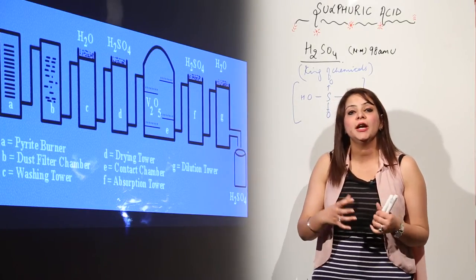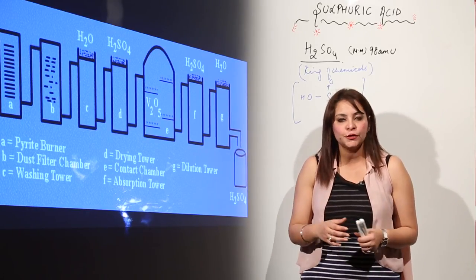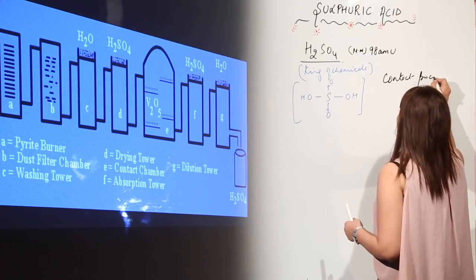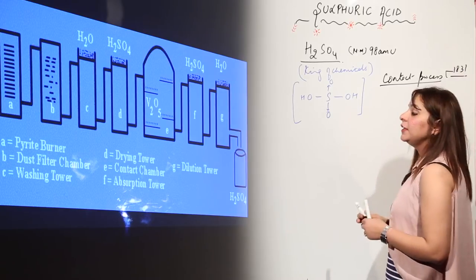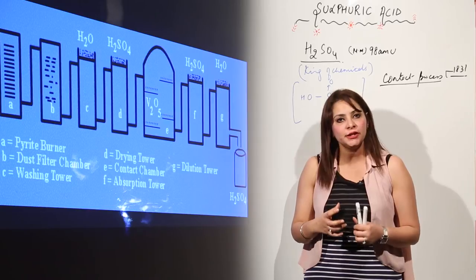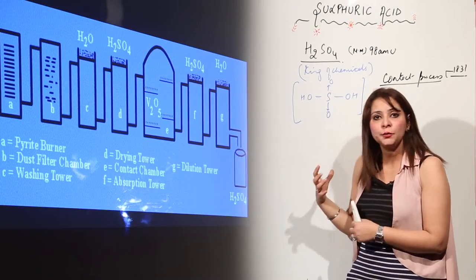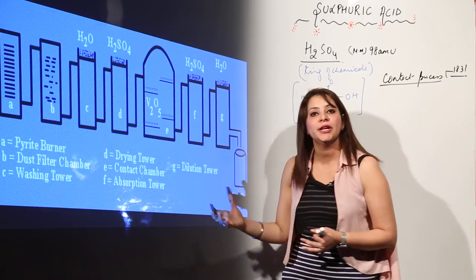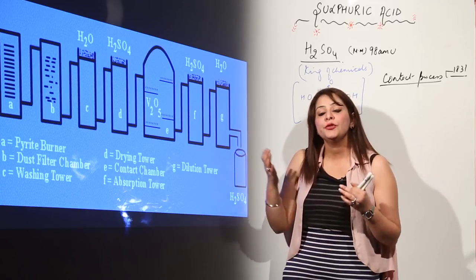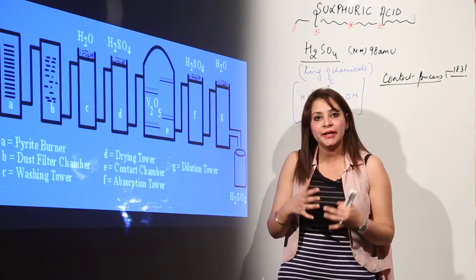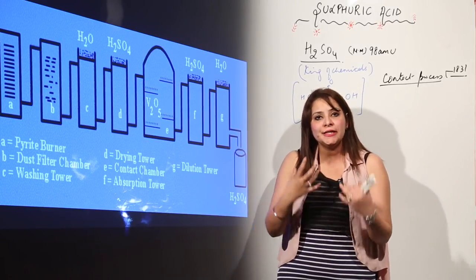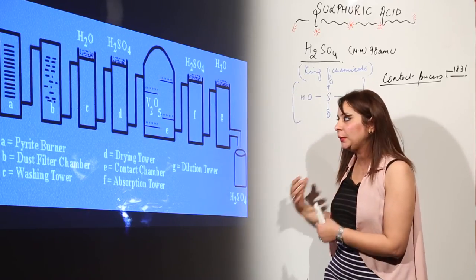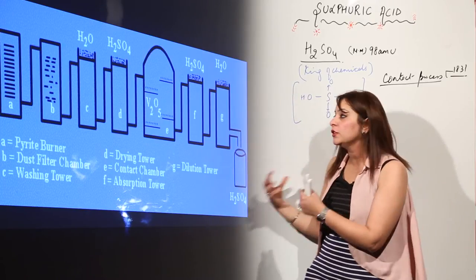There are many processes by which we can prepare sulfuric acid, but the most popular process is the contact process, which has been in use since 1831. We are going to study the contact process. There are many tanks involved in the production, so first let's go through the general equations before discussing the specific tanks.